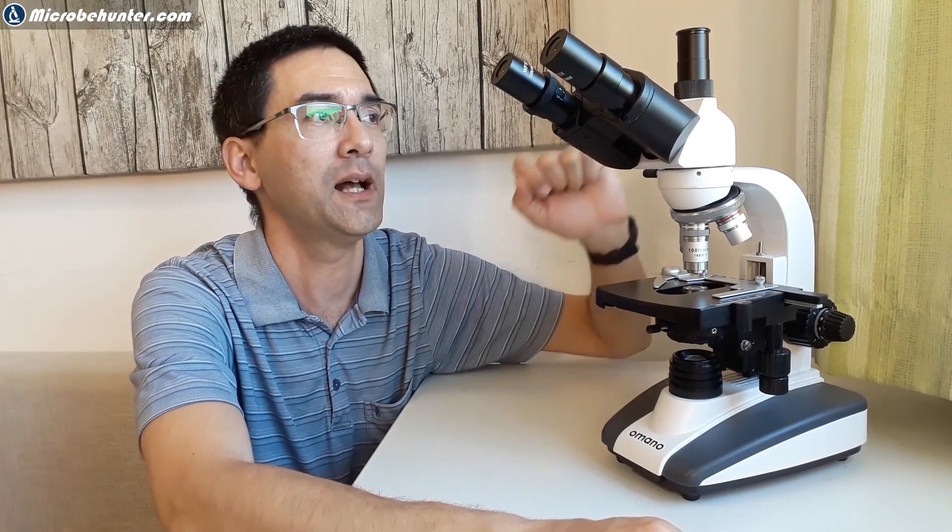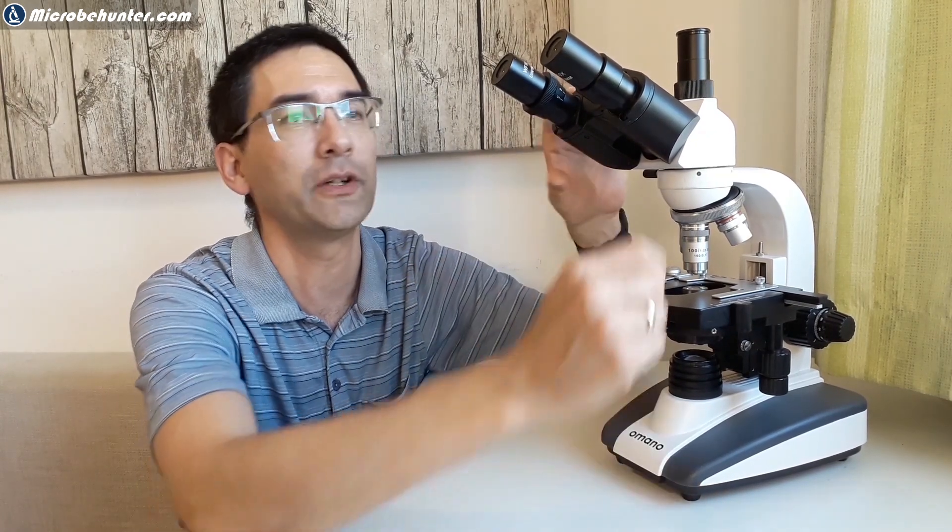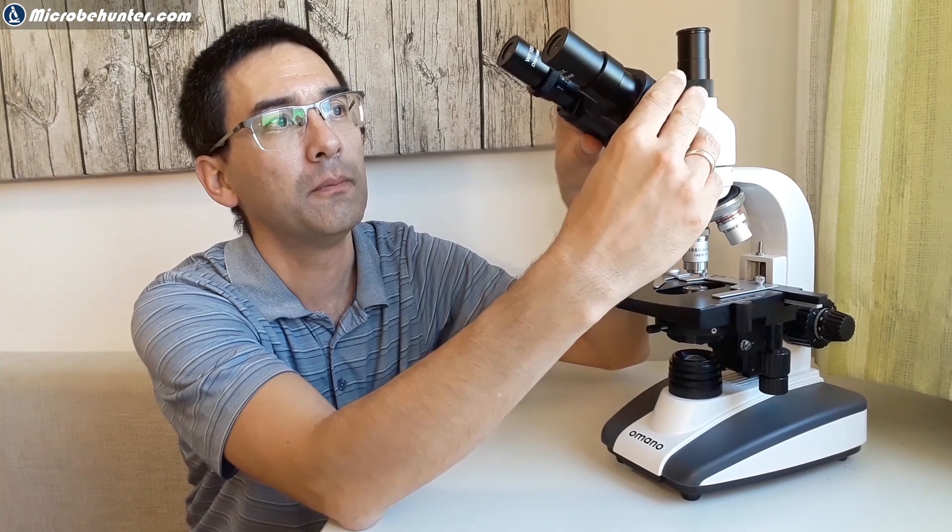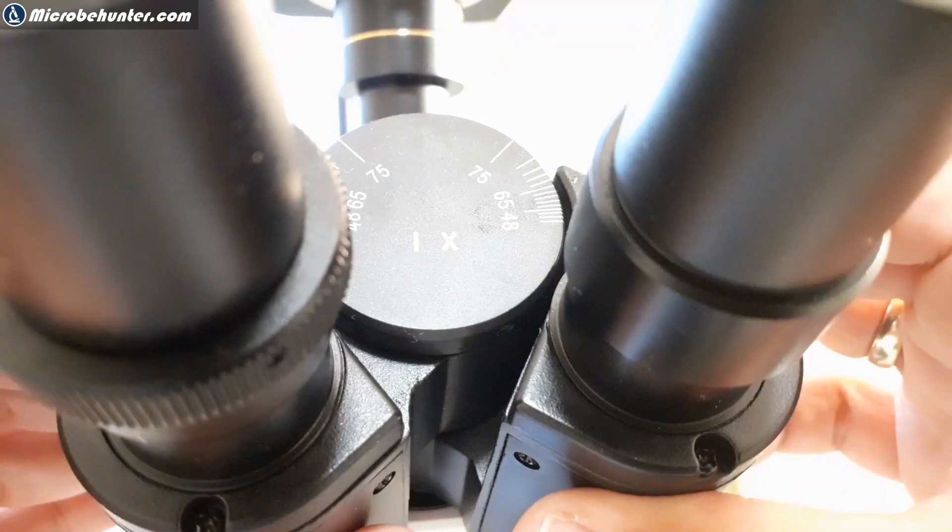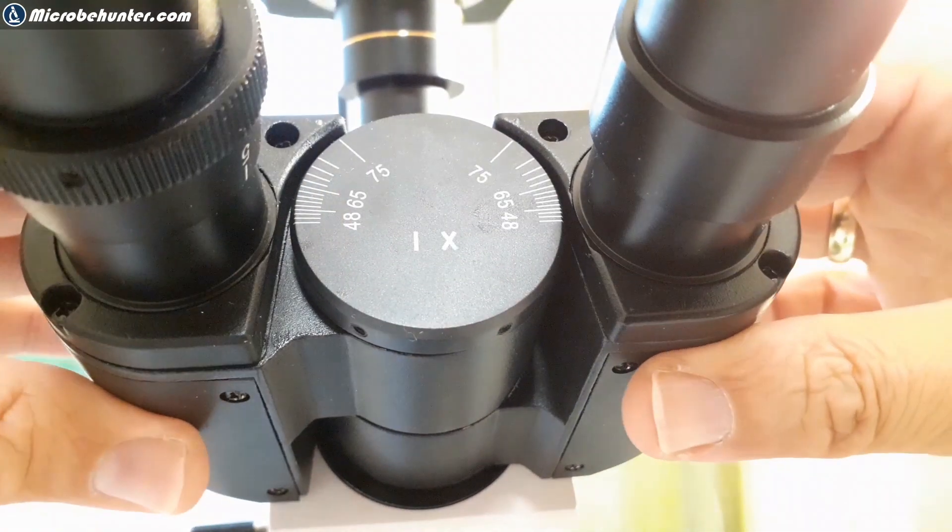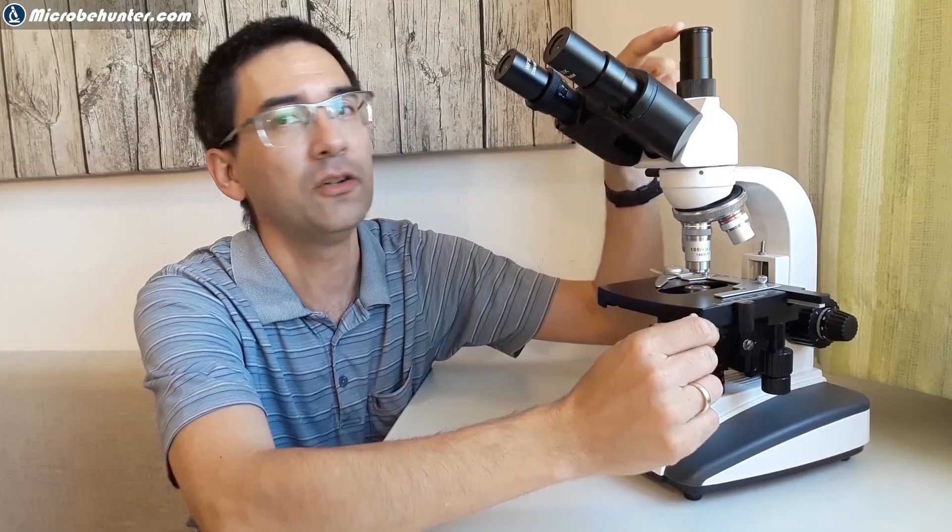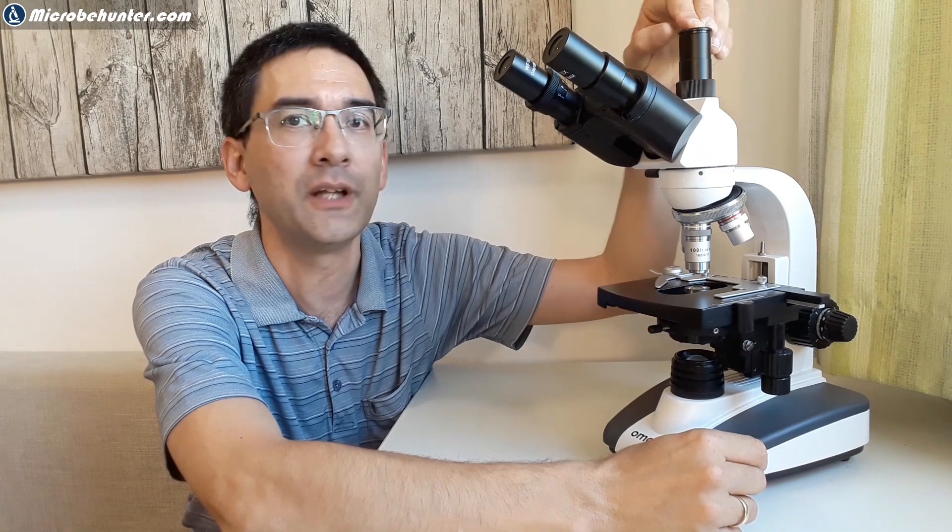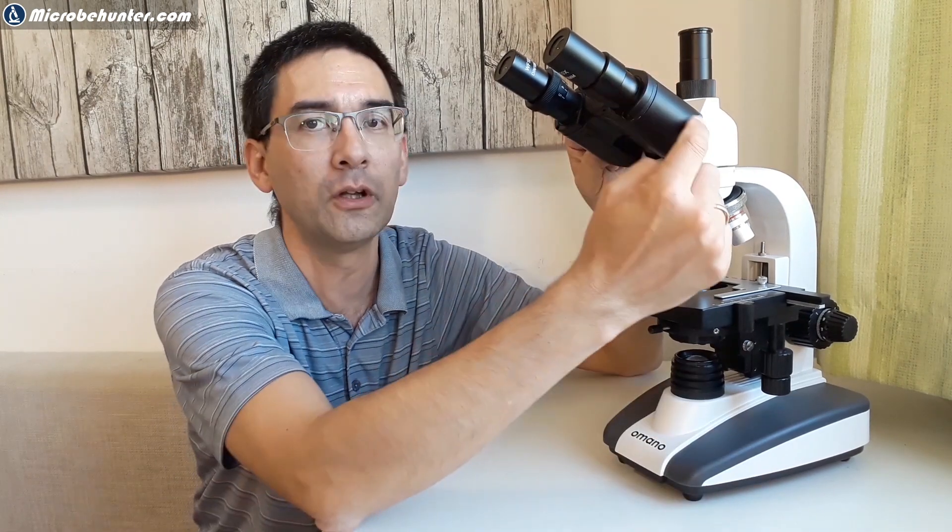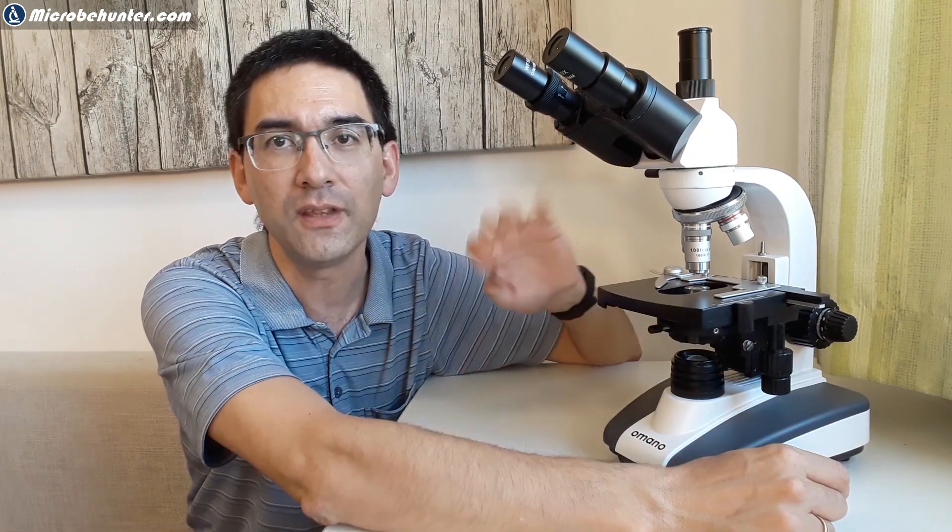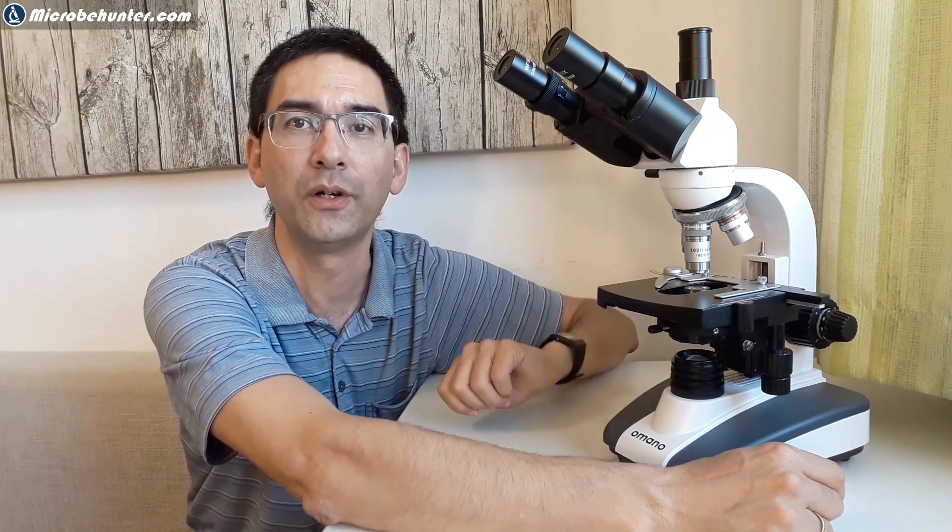This model here has a trinocular version so there are two eyepieces to look through. You can change the eye distance by moving it up and down like this and there is also a photo tube here to attach a camera. This model also comes with binocular without photo tube and basically many of the things that I'm going to talk about will also apply to the other models.